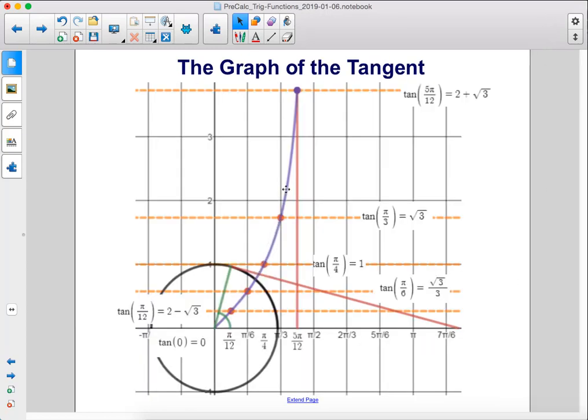Here in purple is the graph of the tangent. We take the tangent values at different points along the unit circle and then graph them out along an x-axis like this. You see that as the point moves up the unit circle, the tan value increases.